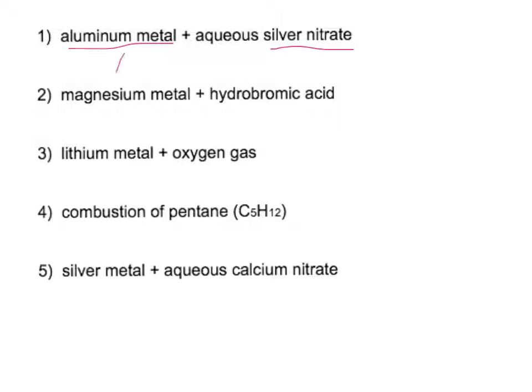So we have aluminum metal, Al, plus silver nitrate. So again, silver is one you just got to memorize. Silver is a plus one charge. Nitrate, if you look up that and your list of polyatomic ions, is a negative one charge, so it's AgNO3.